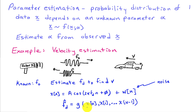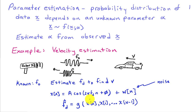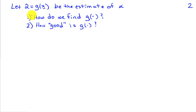We estimate FD by forming some function G of the data. Assuming N samples — X of 0 through X of N minus 1 — we apply G to compute the frequency estimate FD hat. In general, we call alpha hat the estimate of alpha, using hats to denote estimated quantities.